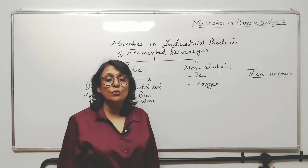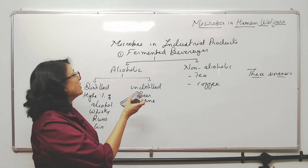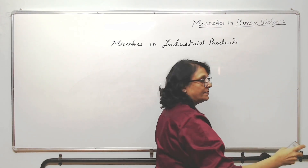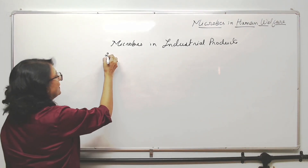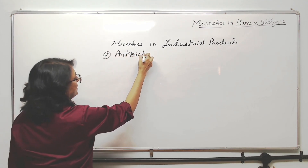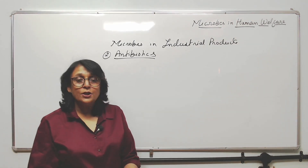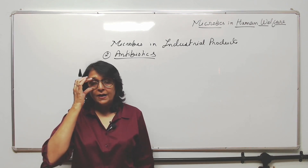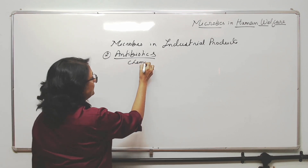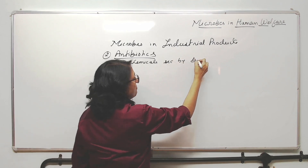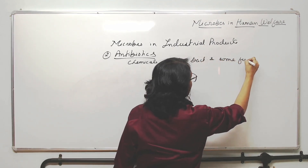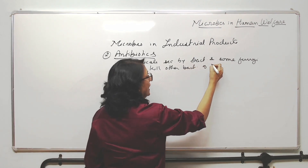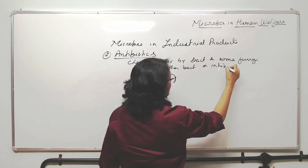This is done on a large scale — it is the microbe used in industry, that is industrial products. Then we have one more thing we obtain from microbes: antibiotics. Antibiotics are taken as medicines and are used to treat bacterial diseases. Antibiotics are chemicals secreted by bacteria and some fungi to kill other bacteria or inhibit their growth.